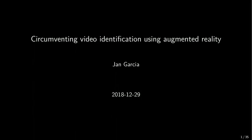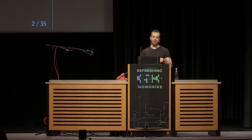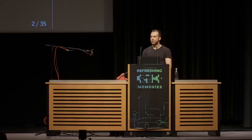Let's first find out what video identification is. Video identification is a process to identify a person remotely so that we know he is who he says he is. This is done using a video chat like Skype, between a call center operator and a user. Example use cases include opening a bank account, purchasing a loan, buying a SIM card, or insurance. In Germany, for some of these use cases, this is even required by law.